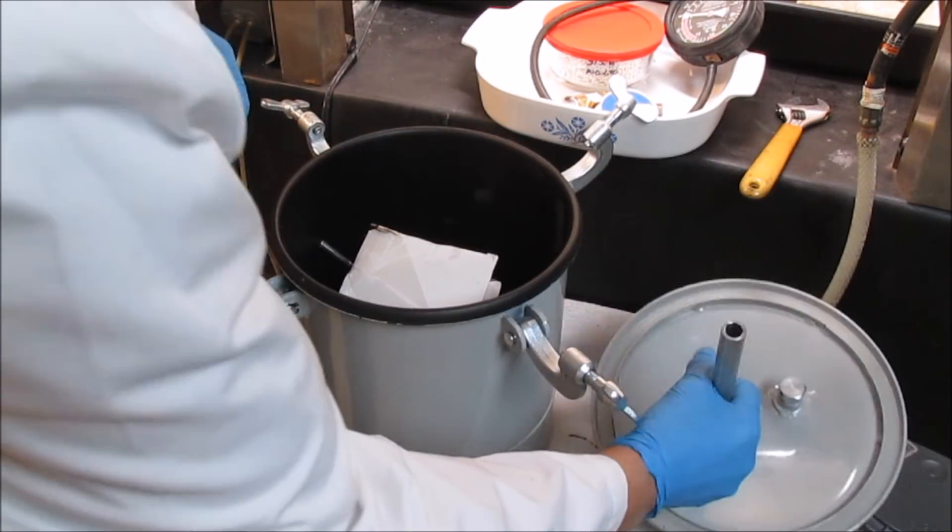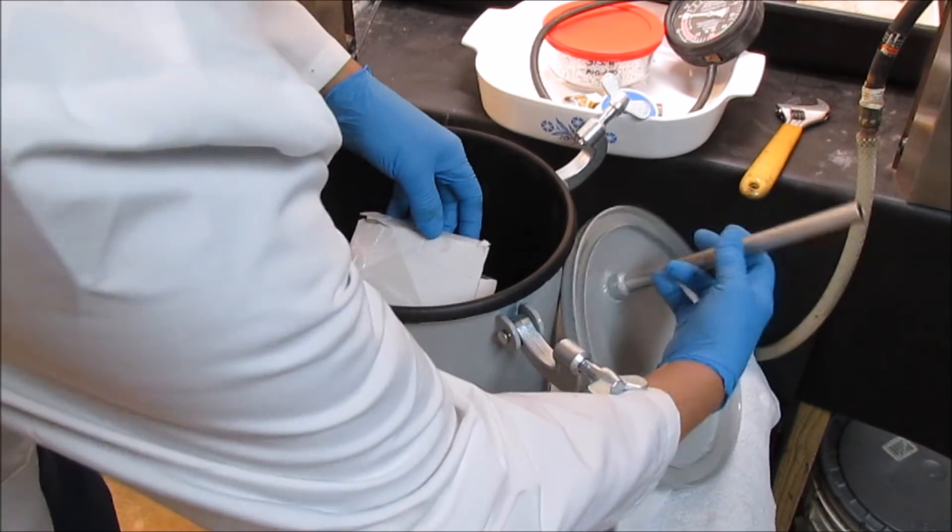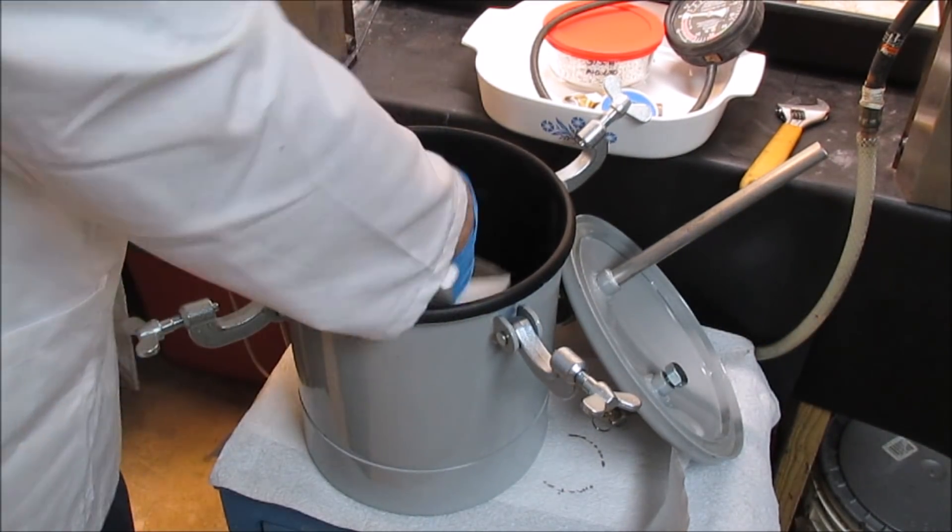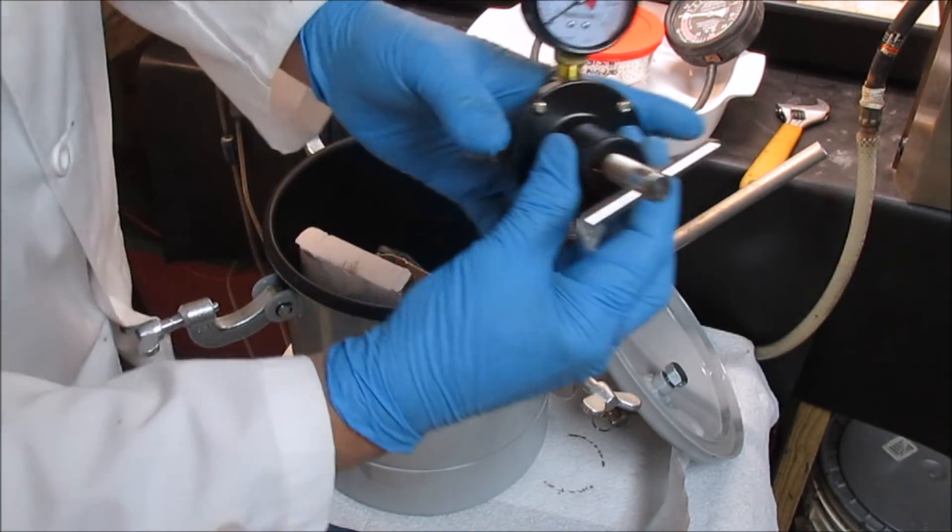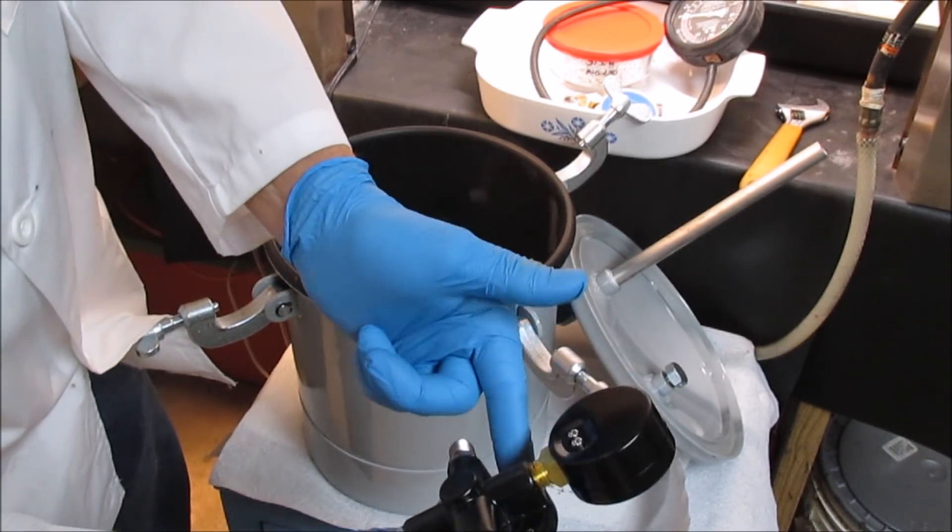And so what I'm going to do is, some more components in here, get these out. This is a pressure regulator for the paint. I'm not going to be using that. I'm just going to set that aside.